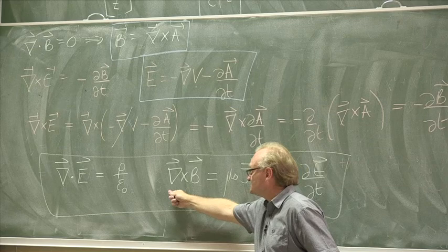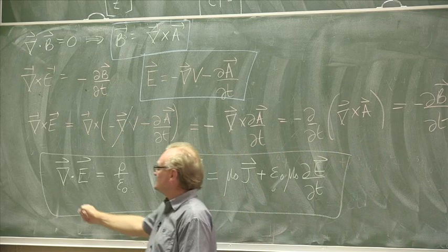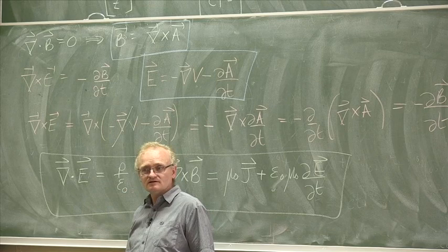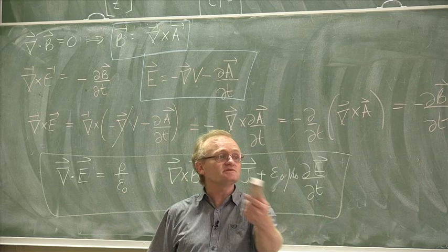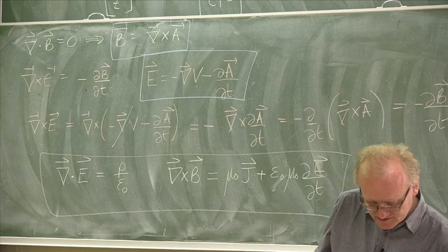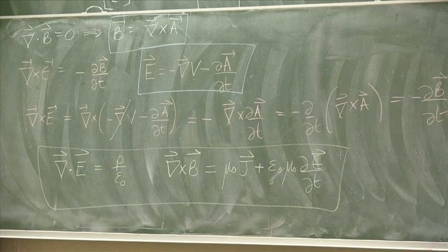If one of these is a vector equation, how many equations is that? Three. And the scalar equation gives one. So that's four equations total. We would expect this to be written as one four-vector equation equal to another four-vector. We'll see how that works shortly.